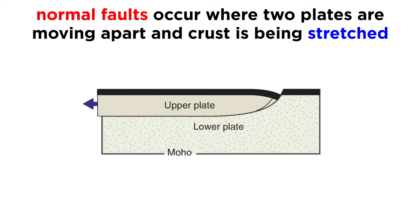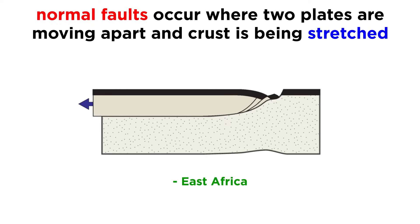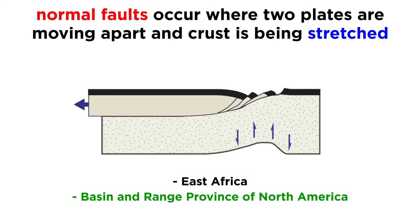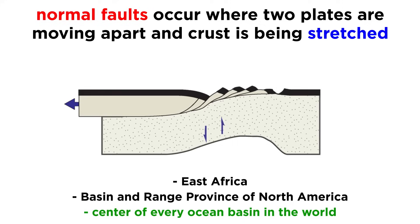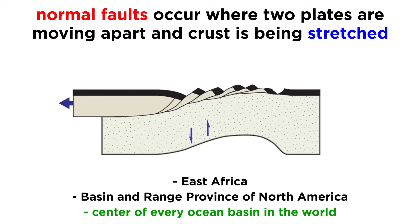Normal faults are most common where the plates are moving apart and the crust is being stretched. This is currently occurring in East Africa, the basin and range province of North America, and at the center of every ocean basin in the world.